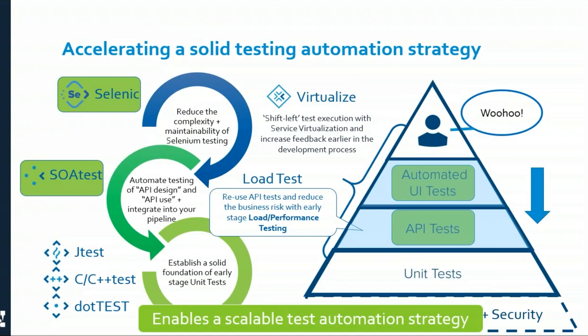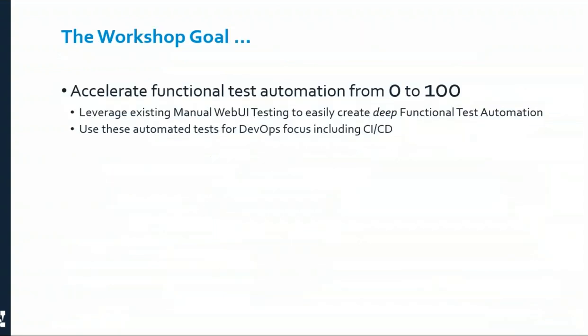Today's workshop focuses specifically on Selenic and Smart API — part of SOAtest. The combination of Selenic and SOAtest drives your automated UI tests and API tests, giving you a top-down approach on systems already in flight. This takes the burden off the manual tester and allows them to be more productive. The one goal of this workshop is to show you how you can accelerate your functional test automation and go from zero to a hundred — using your existing manual UI testing to create deep functional test automation.